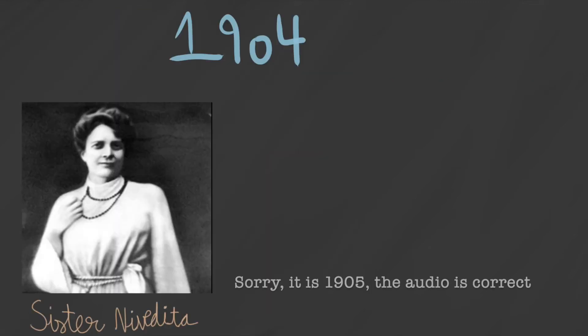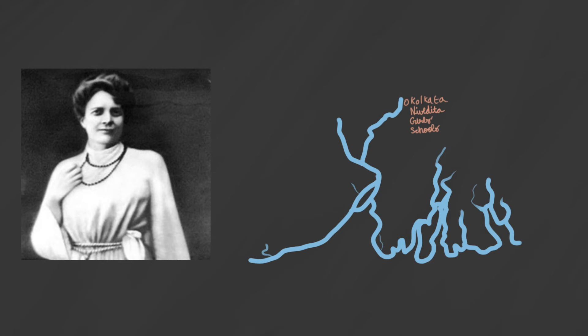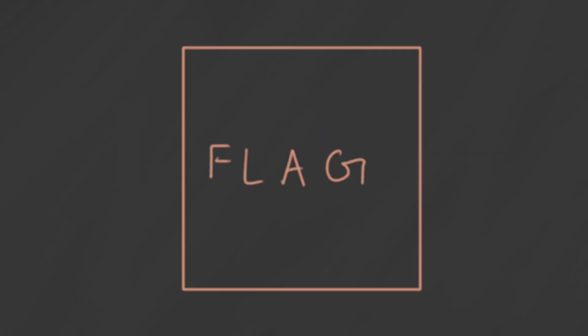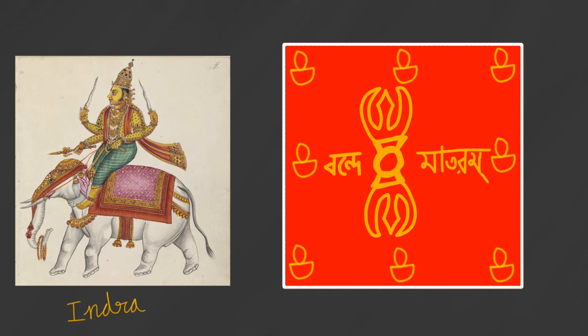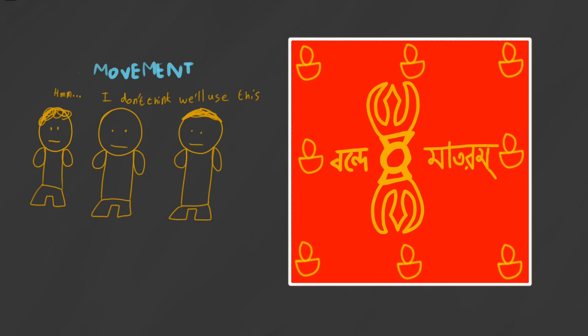Back to the 1900s — in 1905, one of the first proposals came from Sister Nivedita, an Irish follower of Swami Vivekananda. She had started a school in Kolkata, the Nivedita Girls' School, where her students stitched her flag design, which she presented to the Indian National Congress in 1906. This flag is quite interesting: it's square-shaped with a red background and yellow symbols, edges lined with 108 oil lamps, and in the center is the motto 'Vande Mataram' written in Bengali — meaning 'I salute you, motherland' — with the Vajra, symbol of the Hindu god Indra, in the middle.